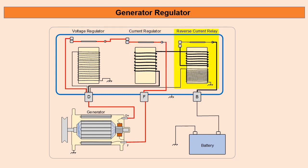Thirdly is the reverse current relay. This is responsible for connecting the generator to the battery to allow it to charge and also to disconnect it so that the battery will not discharge through the generator when the engine stopped.